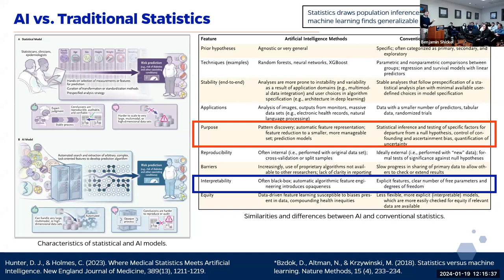Multimodal data means different modalities: continuous EHR data, lab test results, vital signs, medical images you want to pass in whole, waveforms from an ECG, free text like clinical notes. A linear regression model can't really handle that at all. That's one of the main advantages of modern AI — deep learning in particular — its ability to handle multimodal data.